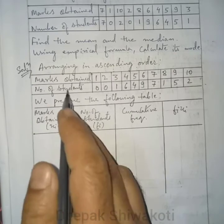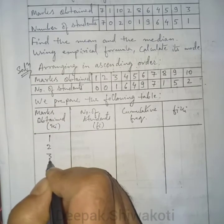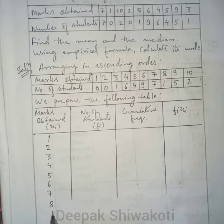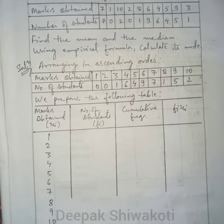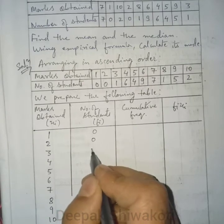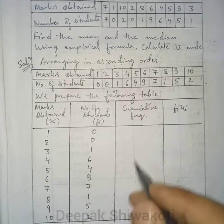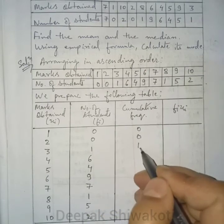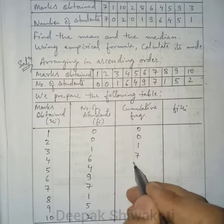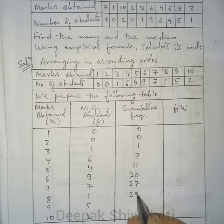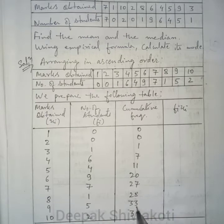Filling the fi·xi column: 1×0=0, 2×0=0, 3×1=3, 4×6=24, 5×4=20, 6×9=54, 7×7=49, 8×1=8, 9×5=45, 10×2=20. Cumulative frequencies: 0, 0, 1, 7, 11, 20, 27, 28, 33, 35.